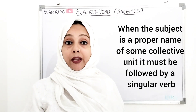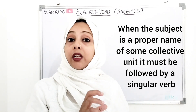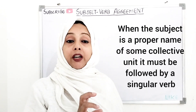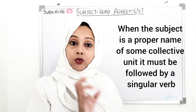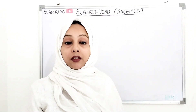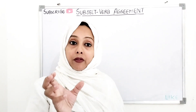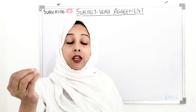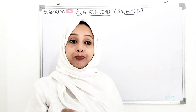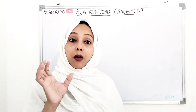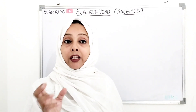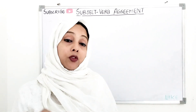When a plural noun is a proper name and it represents a collective unit, we use a singular verb. For example: 'The Arabian Nights is still a favourite.' Or 'Gulliver's Travels is...' — singular verb is used. So if a noun is plural in form, is a proper name, and is a collective unit — a collection of something — we use a singular verb.